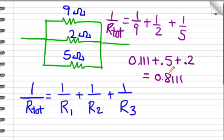To get R total, I have to find the reciprocal of this number, or 1 divided by 0.8111. This is a step that everybody forgets. So if I take 1 divided by 0.8111, I get 1.23 ohms. And that's what the total resistance of these three in parallel equals.